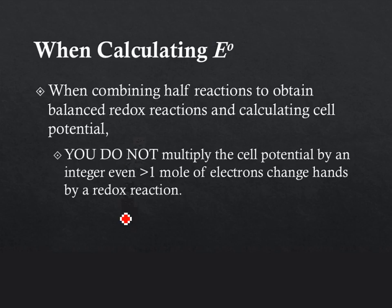We need to look at this as when we see a cell potential, that's the value we're going to use. We don't multiply it by any integers in order to balance or anything like that. So regardless of the number of moles of electrons, the cell potential will stay the same in our calculations.